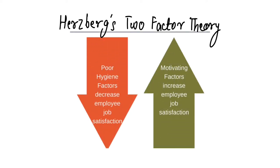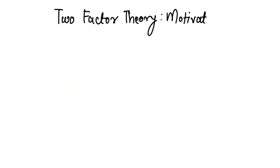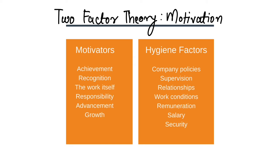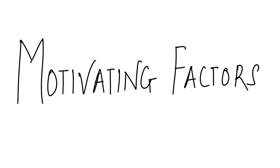Let's look at Herzberg's Two-Factor Theory with a diagrammatical presentation. Poor hygiene factors decrease employees' job satisfaction; motivating factors increase employees' job satisfaction — remember these two important points. The elements under motivators are: achievement, recognition, the work itself, responsibility, advancement, and growth. Hygiene factors include: company policies, supervision, relationships, work conditions, remuneration/salary, and security.